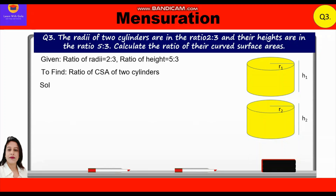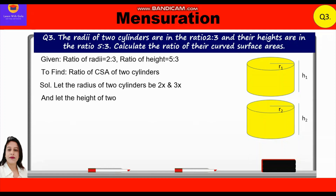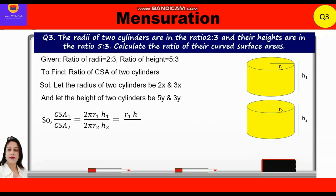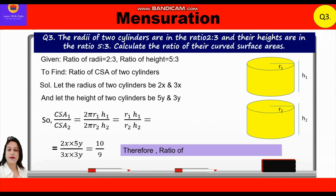Let the radii of the two cylinders be 2x and 3x, and the heights be 5y and 3y. The ratio of curved surface areas = (2πR₁h₁) / (2πR₂h₂). The 2π cancels, leaving R₁h₁ / R₂h₂ = (2x × 5y) / (3x × 3y) = 10/9. Therefore the ratio of curved surface areas of the two cylinders is 10:9.